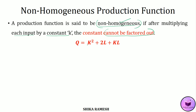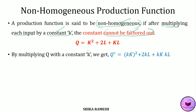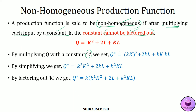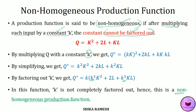For example, consider Q = K² + 2L + KL. Multiplying with the constant K, we get Q* = (KK)² + 2KL + K·KL. Simplifying, Q* = K²K² + 2KL + K²KL. Factoring out K, we get Q* = K × (K¹K² + 2L + K¹KL). Since the constant K could not be factored out completely — for the term 2L there is only one K — from the entire function we can only factor out one K, and the remaining constants are left inside. This is why this production function is a non-homogeneous production function.